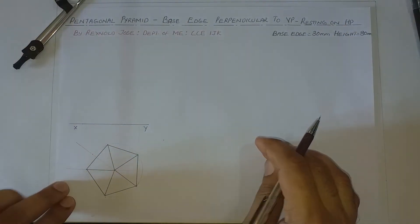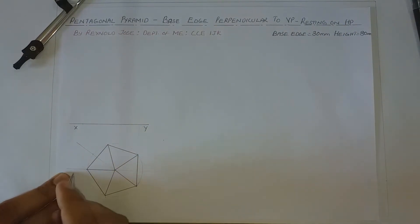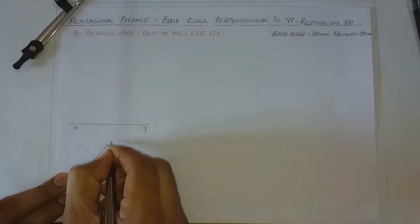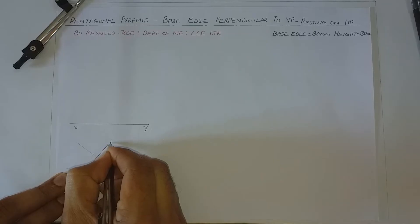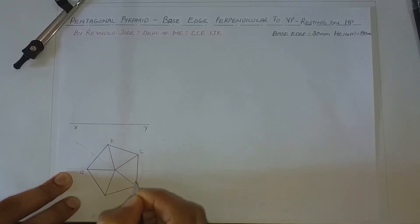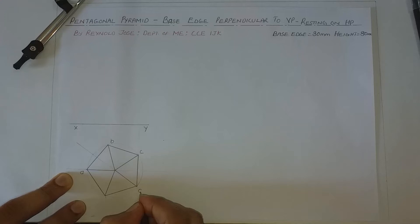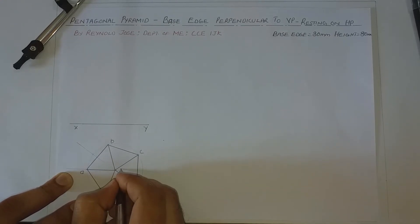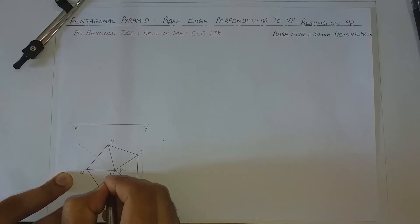We shall name the diagram, starting the naming process from this side. This base corner, let us name it as A, B, and continuing — five base corners. Let us name the apex as P and the center of the base as O.